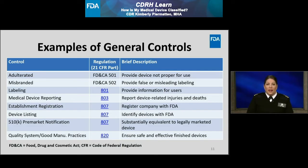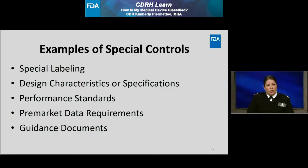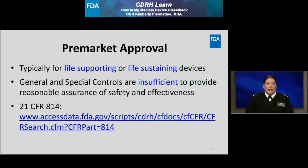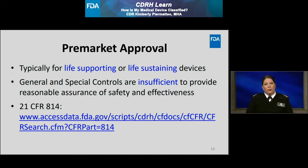Class 2 devices may also be subject to special controls, which would be identified by the FDA and may include special labeling requirements, design characteristics or specifications, or compliance with a particular performance standard or testing. There may also be a special controls guidance document for a particular device type outlining any of these. Class 3 devices are typically life-supporting or life-sustaining. Therefore, due to the level of risk associated with Class 3 devices, general and special controls alone are insufficient to assure their safety and effectiveness.